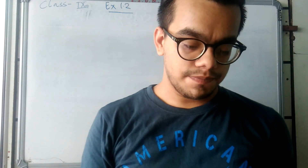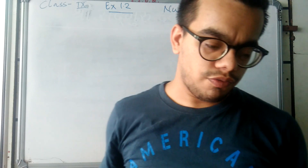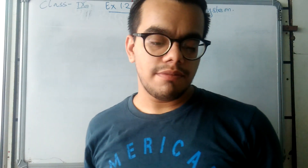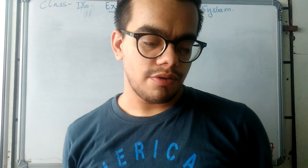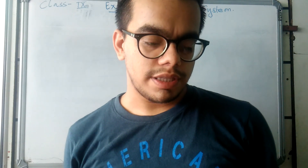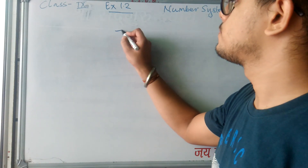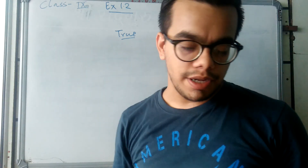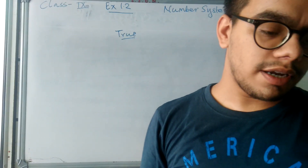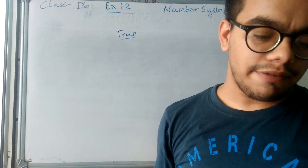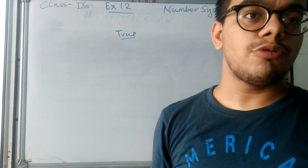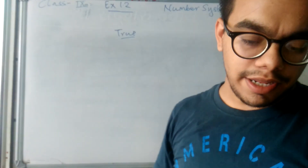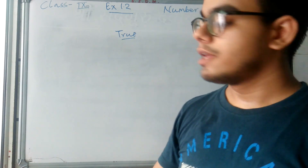The first question we are going to see is true-false: every irrational number is a real number. So this is true. Since real numbers are a combination of whole numbers, natural numbers, rational, and irrational, every number is included in real numbers. So the answer is true — every irrational number is a real number.